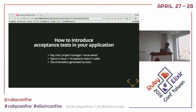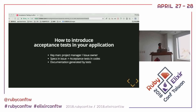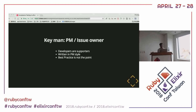So let's get to the main topic. If you want to introduce acceptance tests in your application, I think there are three steps you need to follow — this is my proposal today. The first one is that the key man is your project manager or issue owner — the person who writes down the specs. Then we follow the style that the project manager uses. The second is that all specs should be in your acceptance tests, no matter what. And the third is that we generate the documentation back to the PM.